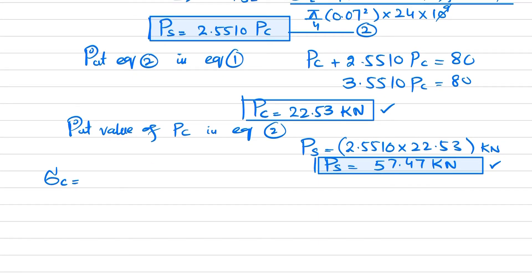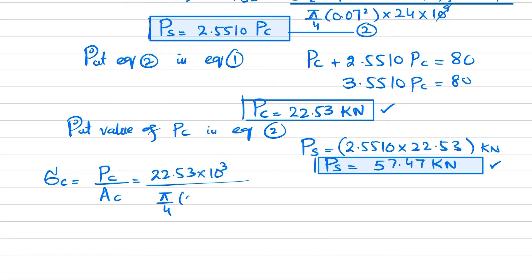Now we can find the average stress in the concrete: σ_c = Pc / Ac = (22.53 × 10³) / [(π/4)(0.07²)]. Solving this gives the average stress in concrete as 5.85 megapascals.